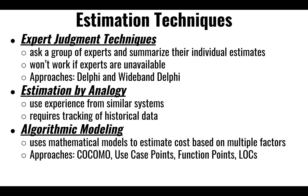We might also create a parametric model where we list all the artifacts that need to be built: all the tables, primary keys, indices, user interfaces, services, data models, repositories — assign a particular complexity to each one, add up all that work, and create a model that gives us an estimate of how much it could take.